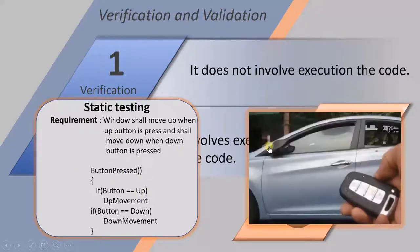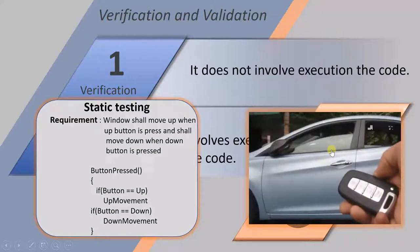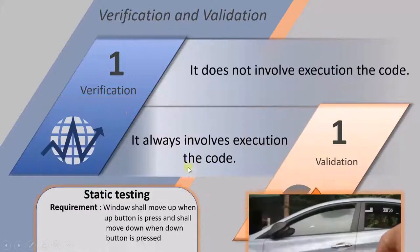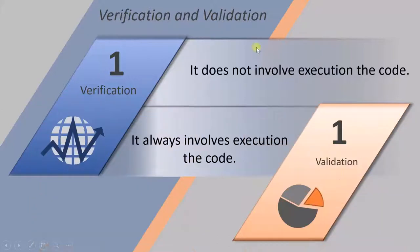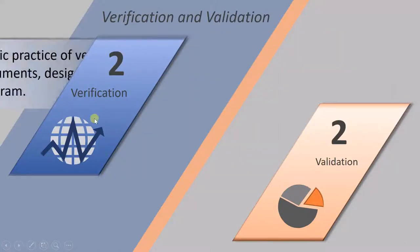In dynamic testing, the code is running, and because of that the window movement happens — when you press the down button the window comes down. So verification does not involve execution of the code, and validation involves execution of the code.